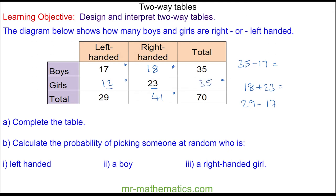We can use this information to calculate the probability of choosing a left-handed person at random. You can see there are 29 people out of a total of 70.